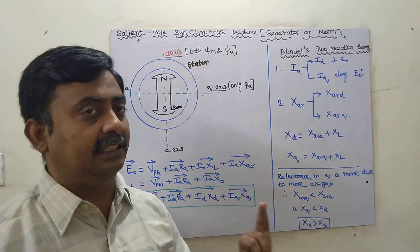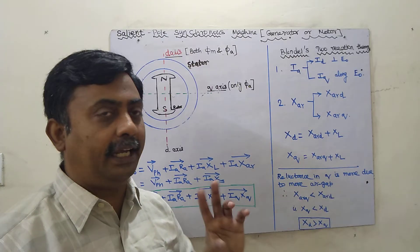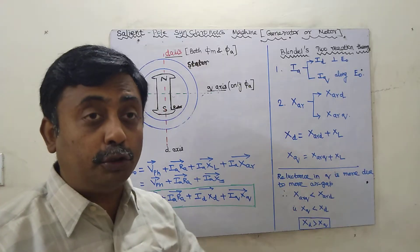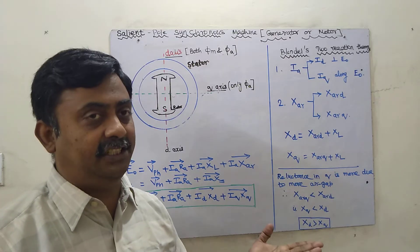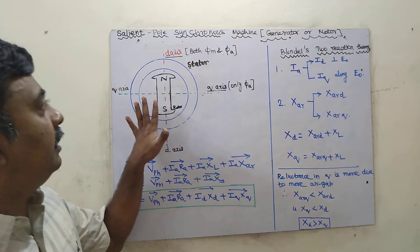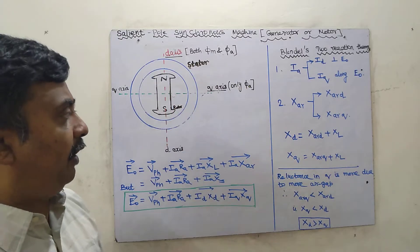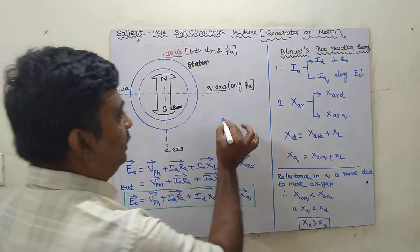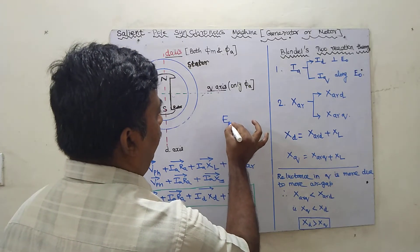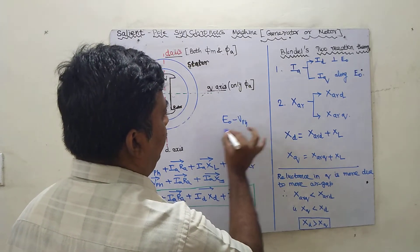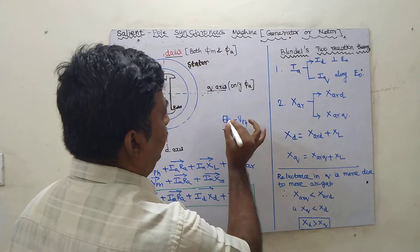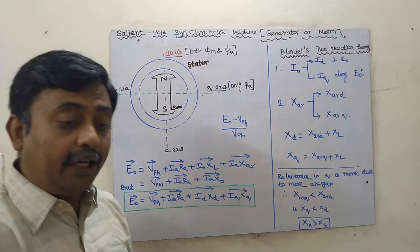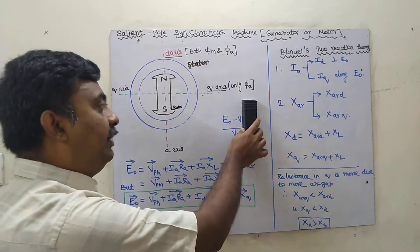We have seen two reactances: armature reaction reactance and leakage reactance. The leakage reactance won't be an issue, but the armature reaction reactance will change. Our ultimate aim is to find the voltage regulation: E0 minus V-phase divided by V-phase. Here V-phase is the rated voltage, so we need to find E0, which requires a different method of analysis.